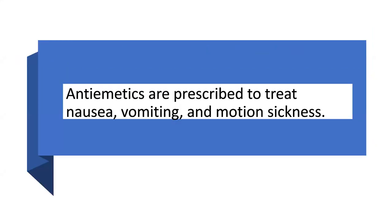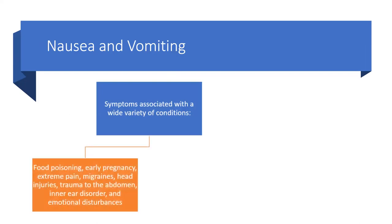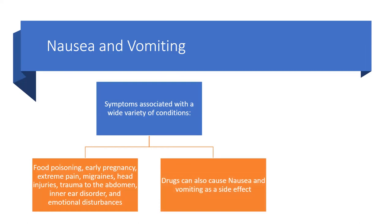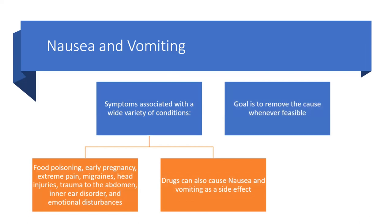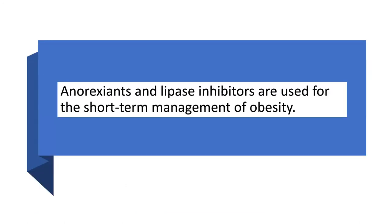Nausea and vomiting are GI disturbances for which anti-emetics can be prescribed. They are symptoms associated with a wide variety of conditions including food poisoning, early pregnancy, extreme pain, migraines, head injuries, trauma to the abdomen, inner ear disorders, and emotional disturbances. Drugs can also cause nausea and vomiting as a side effect. Anti-emetic drug classes include antipsychotics, antihistamines, serotonin receptor blockers, glucocorticoids, and benzodiazepines.